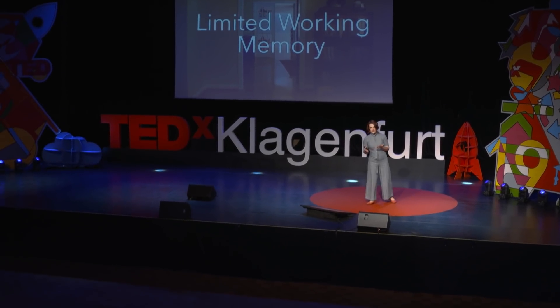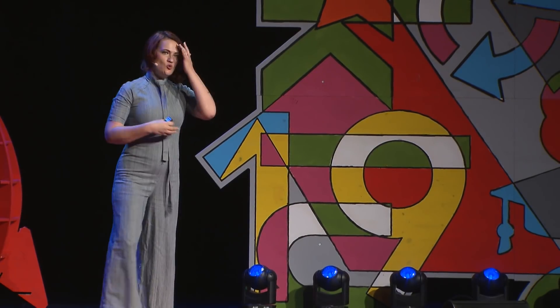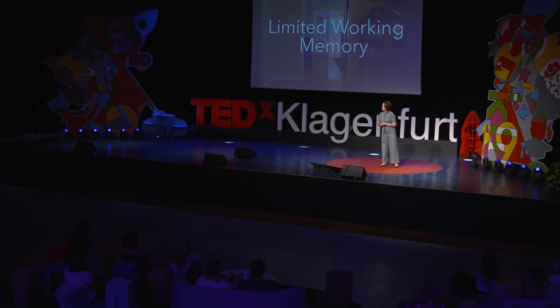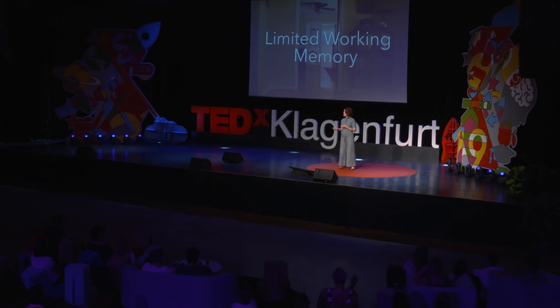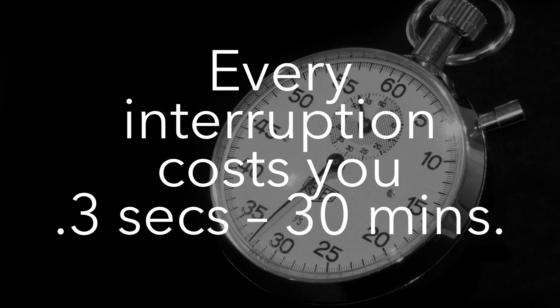Let me give you an example. You're sitting on your couch and you're cold, so you decide you're going to go get a sweater from your room. You walk through that doorway into your room and you say, 'wait a minute, why did I come in here?' That's your short-term memory working properly, believe it or not. You've walked into that room and your brain says 'new context, I don't need this information' and wipes it out to start all over again. This type of interruption is often called a doorway effect, and it doesn't matter whether it's a literal doorway or a virtual doorway. Every time you interrupt yourself like this, you cost yourself anywhere from 0.3 seconds to 30 minutes to get back to the task at hand.